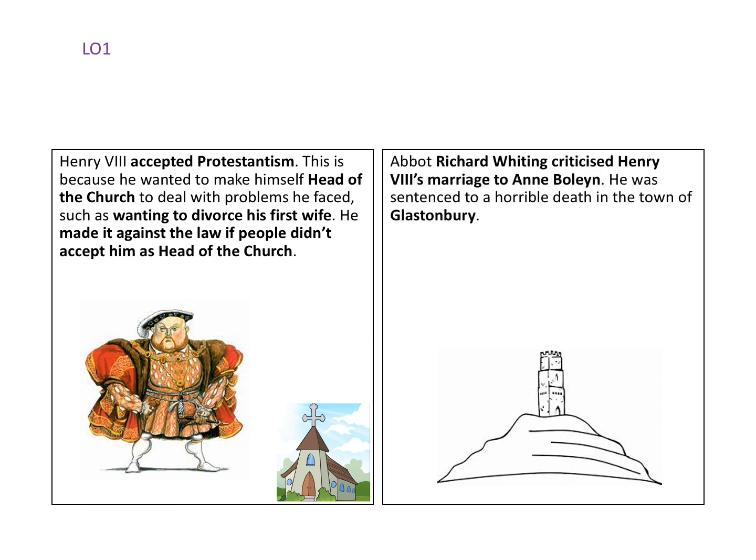Abbot Richard Whiting criticised Henry VIII's marriage to Anne Boleyn and was sentenced to a horrible death in the town of Glastonbury. This is how the story of a German monk links to that horrific execution at Glastonbury in 1539.